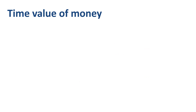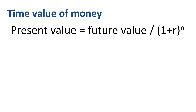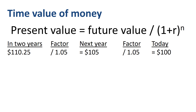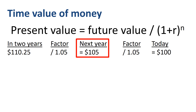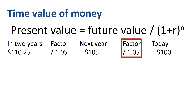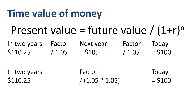We can also work in the opposite direction. The present value equals the future value divided by (1 + the rate of return) to the power of the number of years. $110.25 two years from now divided by 1.05 is $105 one year from now. That same $105 one year from now divided once again by 1.05 equates to $100 present value today. Or going straight from two years from now to today: $110.25 divided by 1.05 squared equals $100 today. 1.05 squared equals 1.1025.